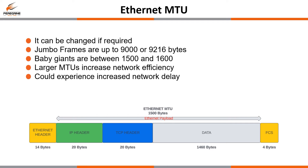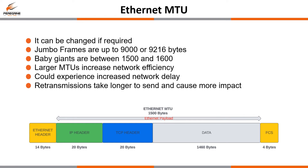There are some downsides though. You could experience increased network delay due to packets taking longer to send, and if you are suffering from packet loss, retransmissions take longer and cause more impact than smaller packets due to them holding more data. If you choose a smaller MTU you are less efficient but have shorter network delay, and when there is packet loss it becomes less of an issue as you have to retransmit less data. Different applications perform better with different MTU sizes — storage over iSCSI is ideally suited to the larger MTU, while real-time applications prefer the smaller MTU.